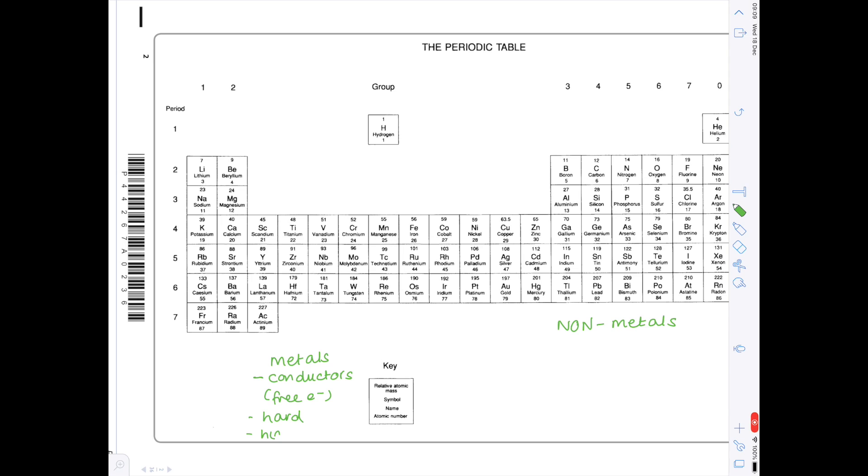They tend to be hard, they tend to have high melting points. In comparison non-metals are non-conductors, the exception here is graphite which is an allotrope of carbon. They tend to be quite soft and they tend to have low melting points.